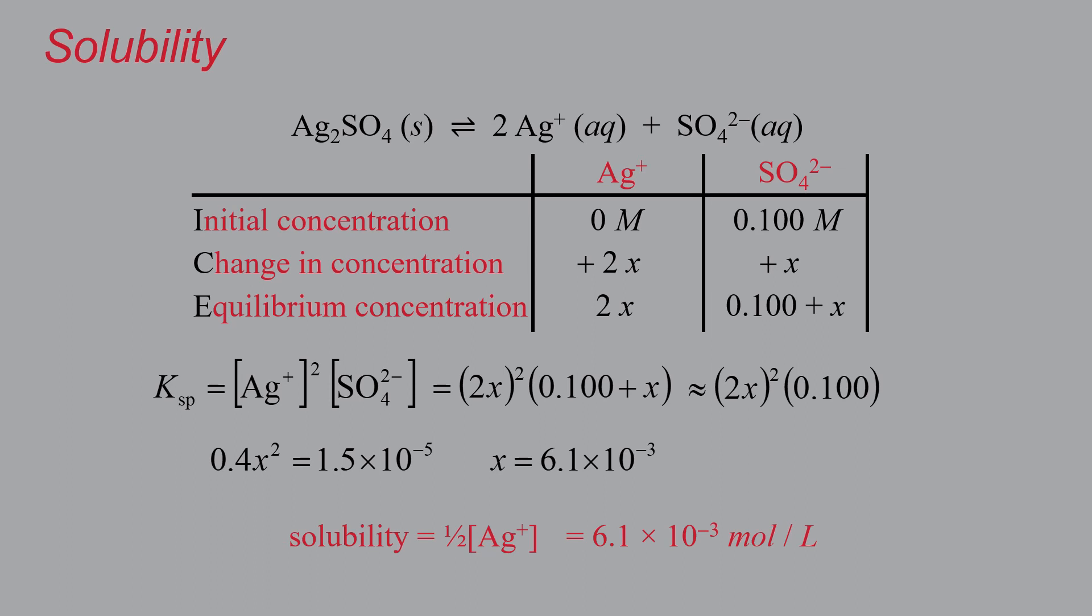Now compare this to the solubility in pure water, and there we figured out the solubility was 1.5 times 10 to the negative 2 molar. The silver sulfate is 40 times less soluble in the 0.10 molar sodium sulfate solution than it is in pure water.